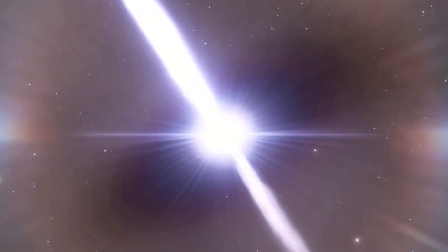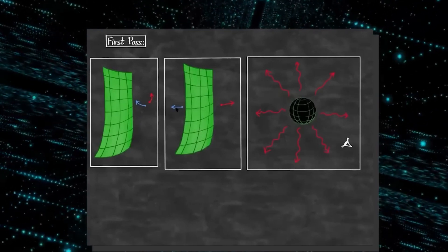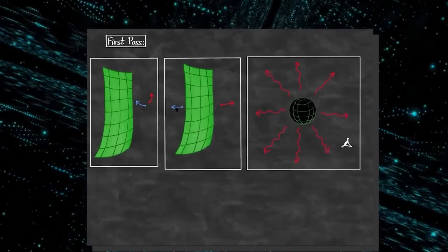However, it didn't coincide with any particularly bright optical or radio source, leaving its physical origin a mystery. In 1967, John Wheeler invented the name black hole for the first time. Before that, they were called dark stars.